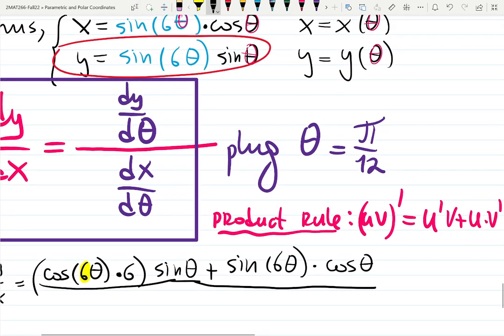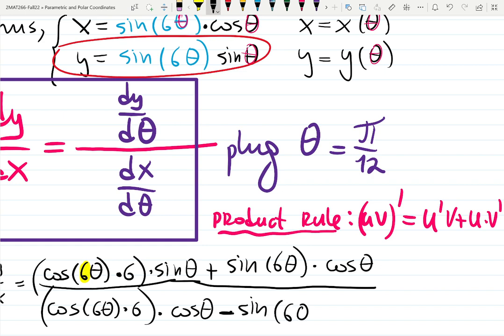And then you do exactly the same thing with x. Derivative of sine 6 theta is, again, cosine 6 theta times 6. Copy cosine theta. And then it will be minus, because derivative of cosine is minus sine. And I know it ahead of time. Sine 6 theta times sine theta.